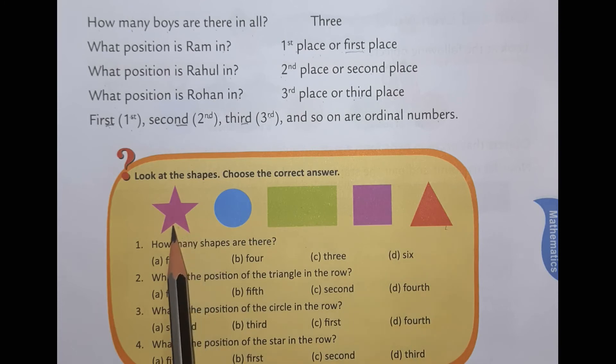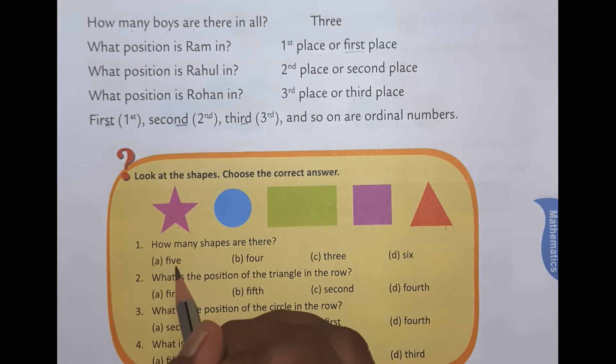How many shapes are there? So how many shapes are there? One, two, three, four, five. So where do we have to tick? Five. So how many shapes are there? Five.